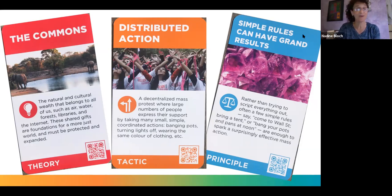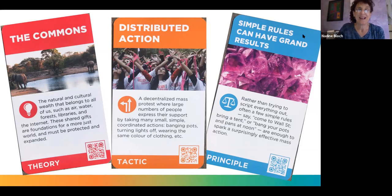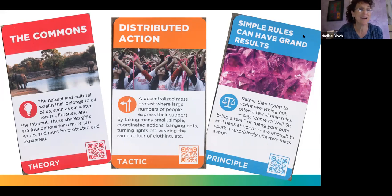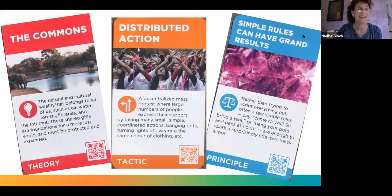In the interactive document on pages five through eight, there are sticky notes. Feel free to write ideas for actions that could be done to support the post office or free and fair elections, with inspiration from these cards: The Commons, Distributed Action, or Simple Rules Can Have Grand Results. For those who cannot get into the Google Doc, feel free to put ideas in the chat box and we'll try to move them into the Google Doc.